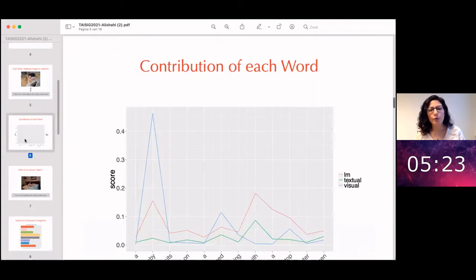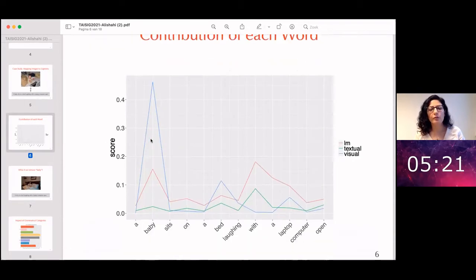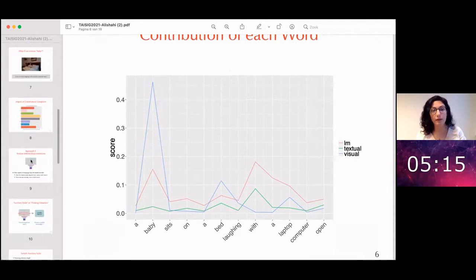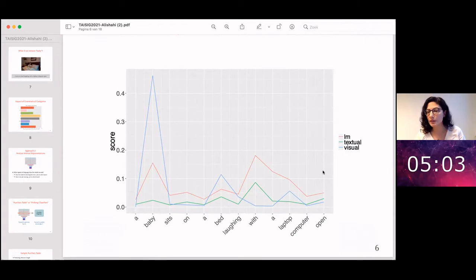Now, if you manage to quantify the contribution of each word, you will see that on the x-axis we have each word and on the y-axis we have the contribution of that word. And if you look at the blue line, you see that the word baby is the most important word in this caption.